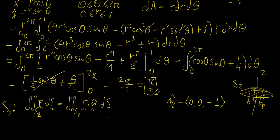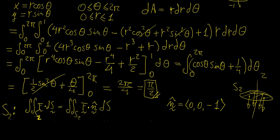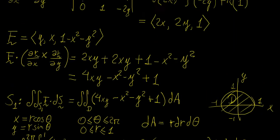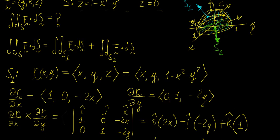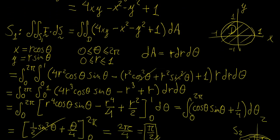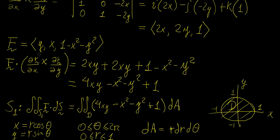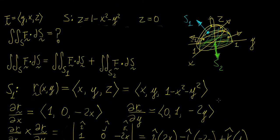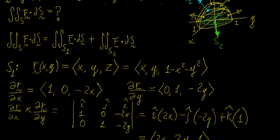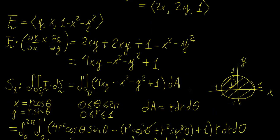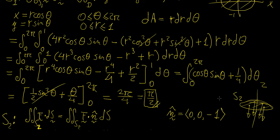Now we calculate the flux integral for surface S2. We need to be a little more careful here. This surface is simply the plane z = 0. The normal vector across this surface is always pointing downwards — it is a constant vector rather than a vector function. This is because on the paraboloid the normal vector changes at each point, requiring the cross product expression, whereas on the flat plane z = 0 the normal vector always points directly downward, so we write it as a constant.